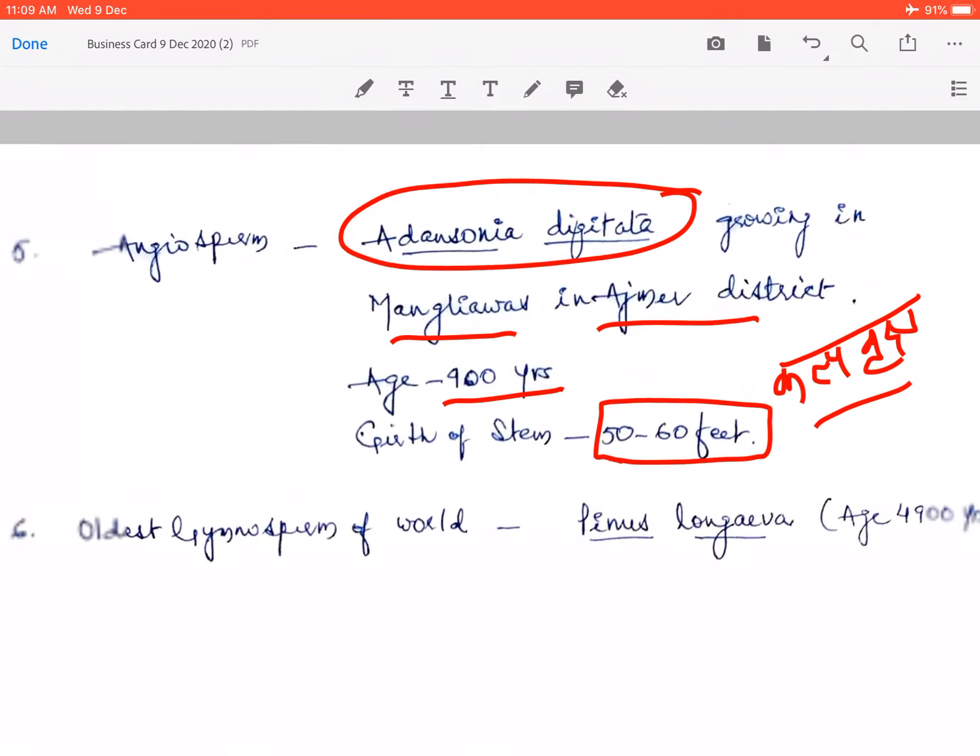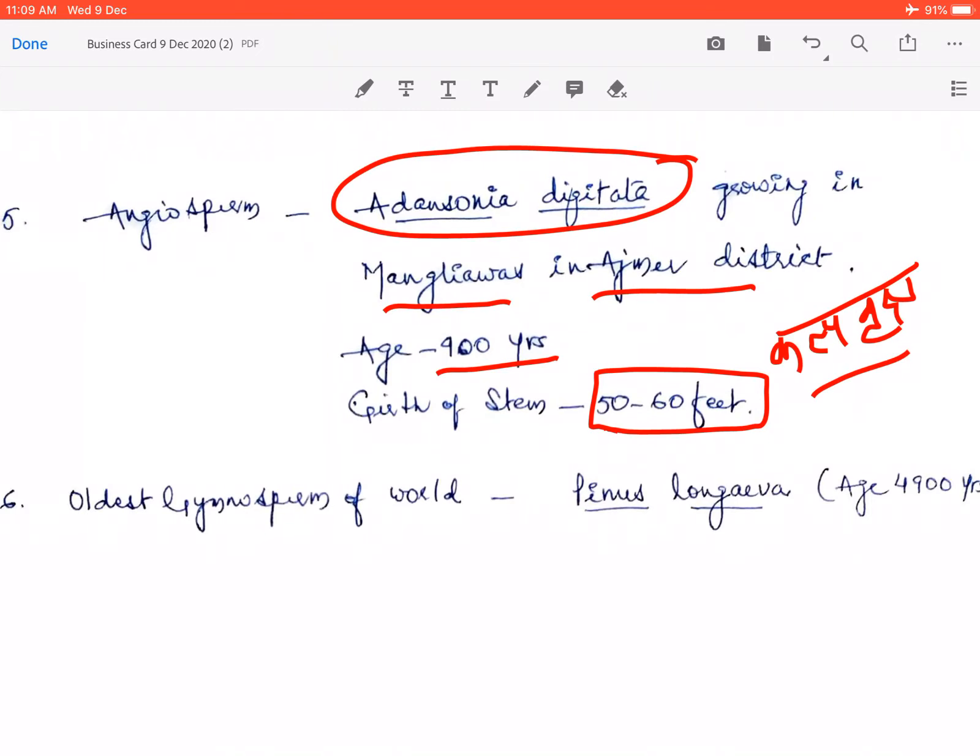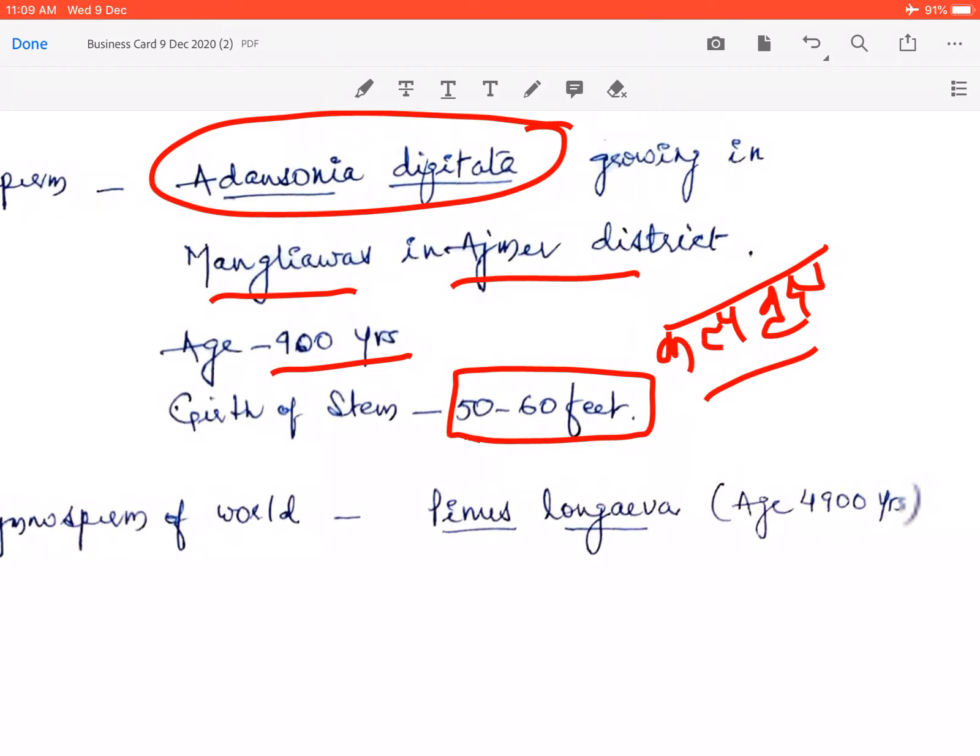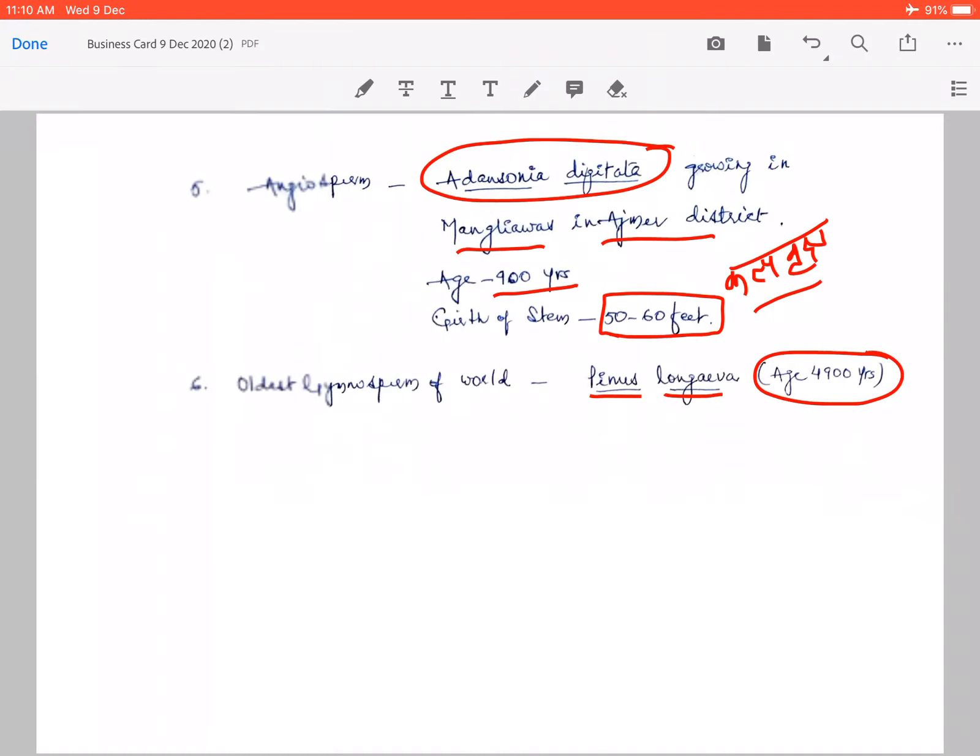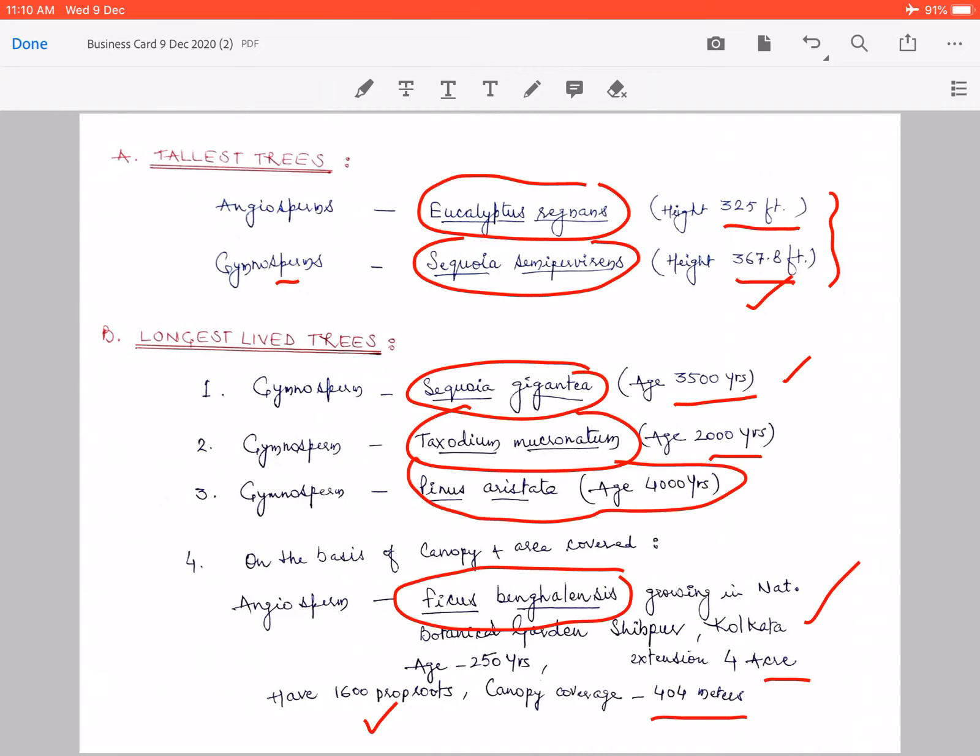Iske baad hum baat karenge jo sabse oldest gymnosperm hai world ka jis ka naam hai Pinus longeva. Pinus longeva ye woh gymnosperm hai, woh conifer hai jiski aayu karib 4900 varsh ke lagbhag ankhi gayi hai. Toh aap dekh sakte hain ki these are the life examples jo ki hamari earth surface ke upar jo trees hain ye different areas mein globally paaya jate hain aur jo ki tallest and longest lived trees maane jate hain. That's all about my today's lecture, thank you.